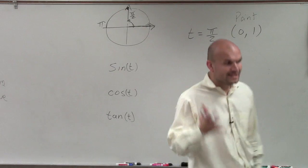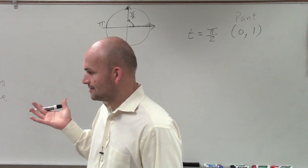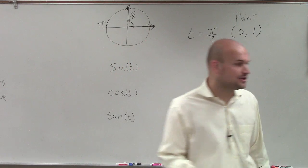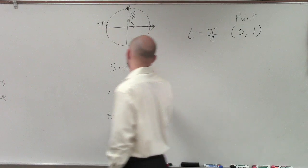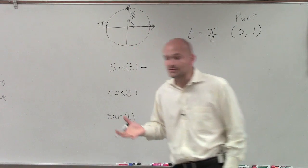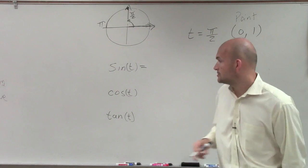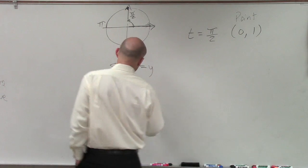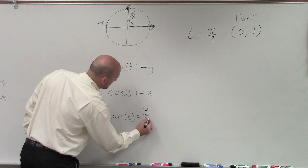Now remember, only when you have an angle that has a point on the unit circle does sine of t equal the y-coordinate. Because only when it's on the unit circle is our hypotenuse of our triangle equal to 1. So sine is equal to y, cosine is equal to x, and tangent is equal to y over x.